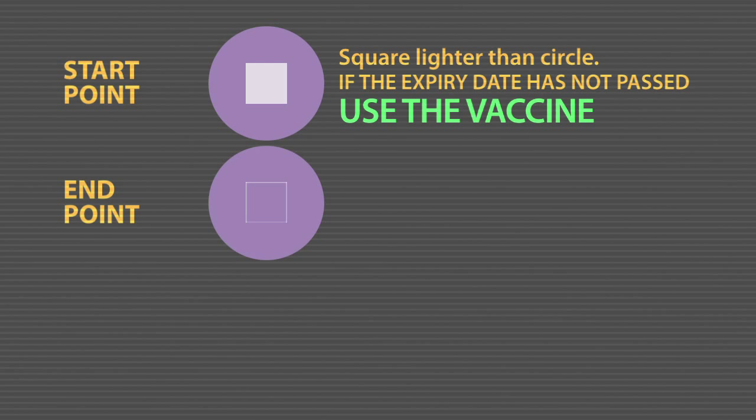When the colour of the square matches the colour of the circle, the vaccine has reached its end point. The vaccine cannot be used anymore, even if the expiry date has not been reached.